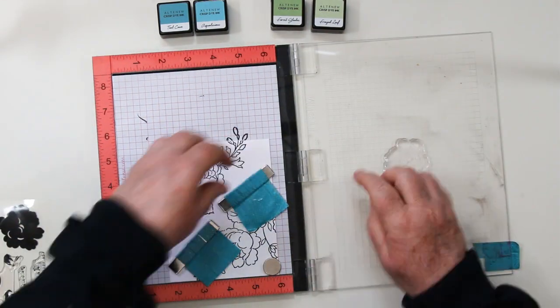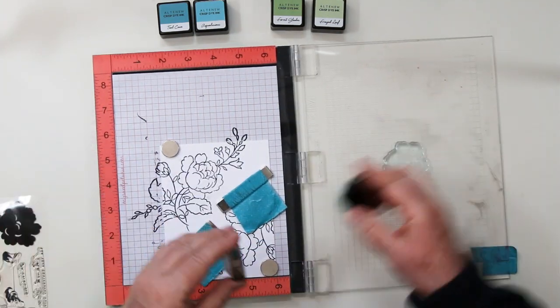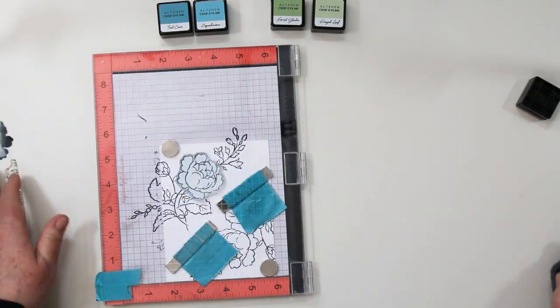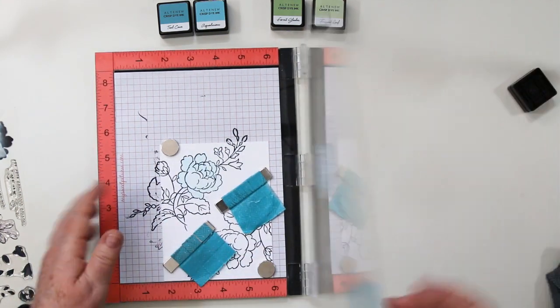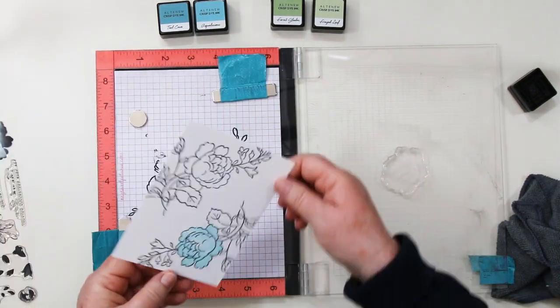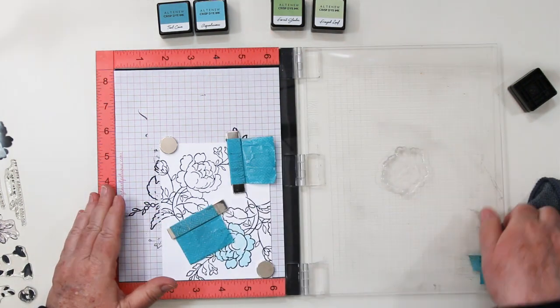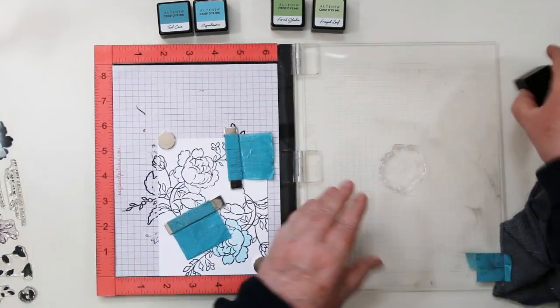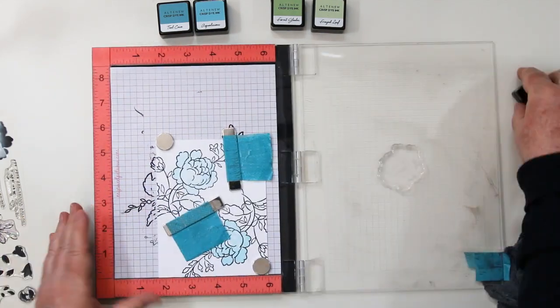I'm also using the same colors as I did in yesterday's video. Make sure that your paper hasn't moved. Again, with these solid image stamps, they sometimes pull your paper around. That's why I have extra magnets. I'm going to stamp this image twice so that I have a nice solid image. Flip it around, line it up again. The lining up is very important. Take the extra couple of minutes to do that.